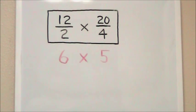20 over 4 simplifies to 5, since 4 goes into 20 five times.